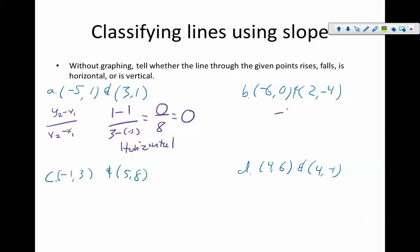For part B, we've got negative 4 minus 0 over 2 minus negative 6. That's giving me negative 4 over positive 8, which is negative 1 half. This is a negative slope. So, this is falling. This is going downhill.